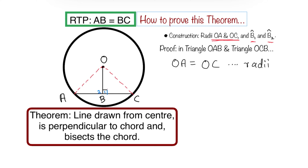The second thing is: angle B2 in triangle OAB is equal to angle B1, and both are equal to 90 degrees. The reason is: it's given — as you can see, the 90-degree angle is given in the diagram.